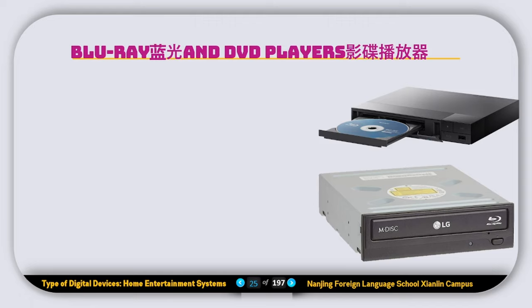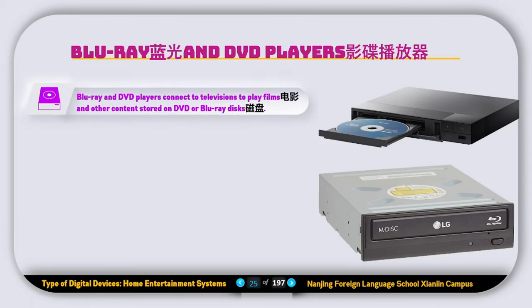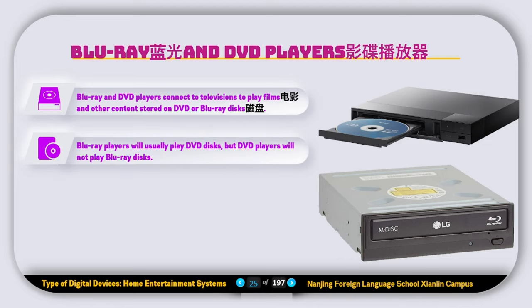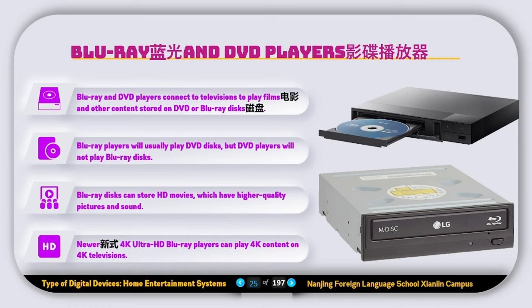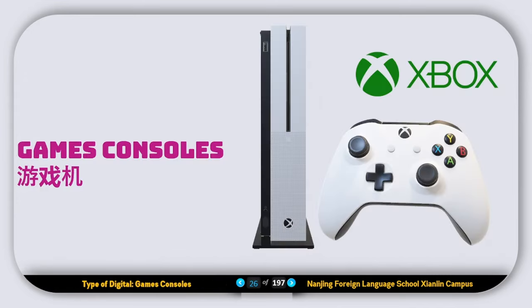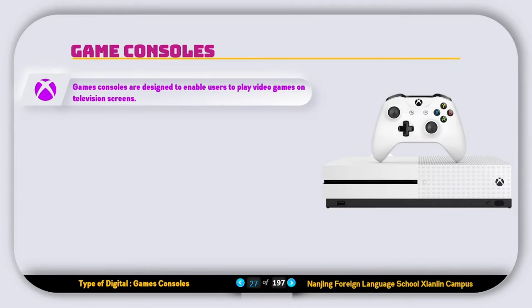Now let's talk about Blu-ray and DVD players — note we are talking about the players, not the discs. Blu-ray and DVD players connect to a television to play films and other content stored on DVD or Blu-ray discs. Blu-ray players can usually play DVD discs, but DVD players will not play Blu-ray discs. Blu-ray discs can store HD movies with higher quality pictures and sound. Near 4K ultra HD Blu-ray players can play 4K content on 4K televisions.